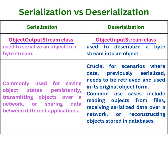Serialization is commonly used for saving object states persistently, transmitting objects over a network, or sharing data between different applications.